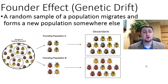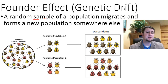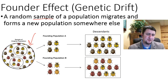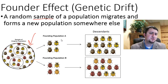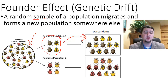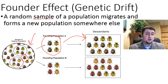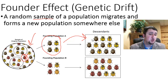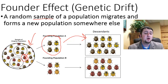Another way genetic drift can occur is through what we call the founder effect, where a random sample of a population migrates and forms a new population somewhere else. Let's say we have a population with a lot of variation of different beetles. If just a few of those beetles randomly go off and form a population on a new island, those red beetles that are not part of the founding population will never show up in the new population. Only the brown ones and yellow ones that made it to the new island are going to be the ones capable of founding that new population.